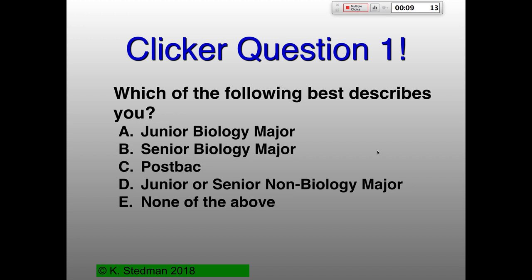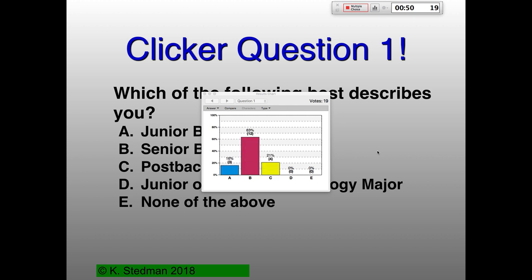I actually have this information already, so I'll see if you actually agree with the information that I have, which may or may not be correct. But also gives a bit of an idea of the distribution of people who are in the class. I didn't put graduate students on here — that would be none of the above as well. Auditors would also be none of the above if they happen to have clickers.